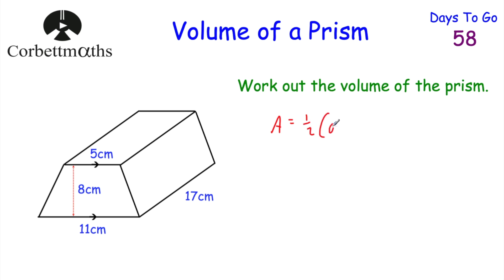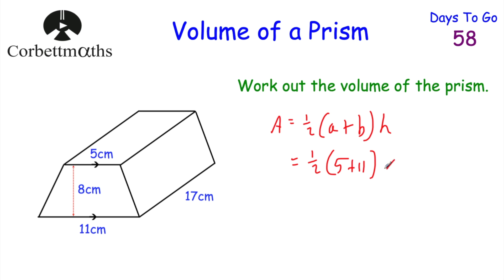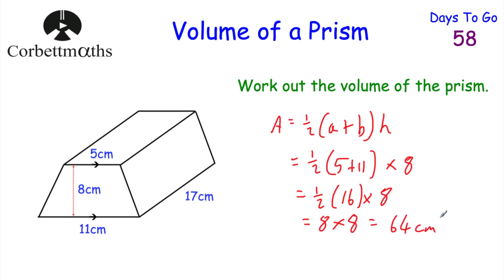The area of a trapezium is equal to a half times (a + b) — the two parallel sides — multiplied by the height. So we're going to do half of (5 + 11), which is the two parallel sides, multiplied by h = 8. 5 plus 11 is 16, half of 16 is 8, and 8 multiplied by 8 is 64 centimetres squared. That's the area of the trapezium cross-section.